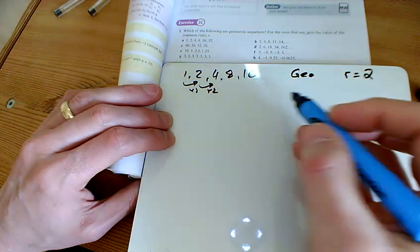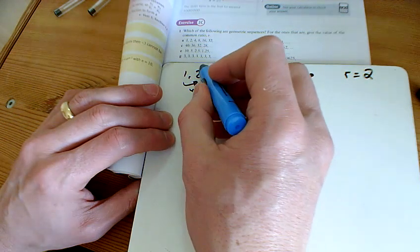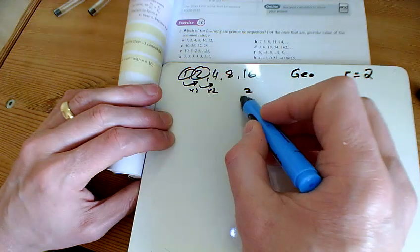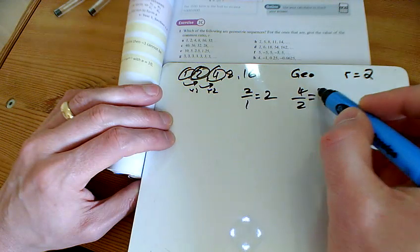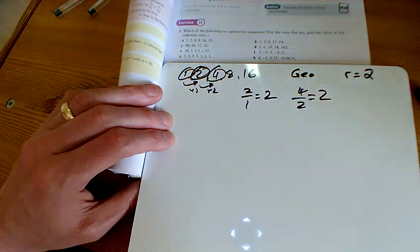How would we work that out if you didn't know? You'd do 2 divided by 1. 2 divided by 1 is 2. 4 divided by 2, that's 2 as well and you could go along checking that that worked.